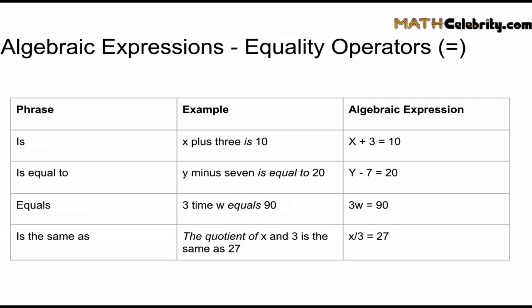Whenever you see those four phrases in an algebraic expression, you know you have an equation. And what you do is, you substitute those phrases with the equal sign. Let's look at the first one, x plus three is ten. Well, in the prior slides we know x plus three, we use the plus sign, that's an addition operator. But then the end of this algebraic expression tells us, is ten. Which means we set that entire expression equal to ten.